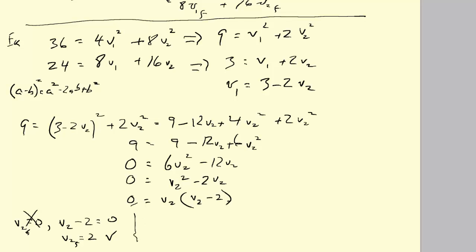This is going to happen where your math delivers up two perfectly correct mathematical results, but one of them doesn't make any sense in the physics. So we're going to reject that guy and accept that one. Now that we know what V2 is, V1 is over here. V1 final is 3 minus 2 V2 final, so 3 minus 4 is negative 1 meters per second.